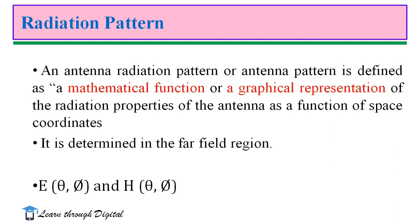What is meant by radiation? Radiation is nothing but the emission or reception of electromagnetic waves of an antenna. Pattern is nothing but a mathematical function or graphical representation. Radiation pattern is otherwise called as antenna pattern, and it is defined as a mathematical function or graphical representation of the radiation properties of the antenna as a function of space coordinates. Generally, radiation pattern is determined in the far field region.